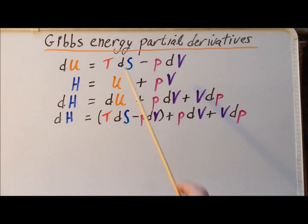Next, we substitute the expression we have in the first line for dU in for dU in our expression for dH. And this is what we get writing out all the terms. The terms that are in parentheses are our substitution for dU.